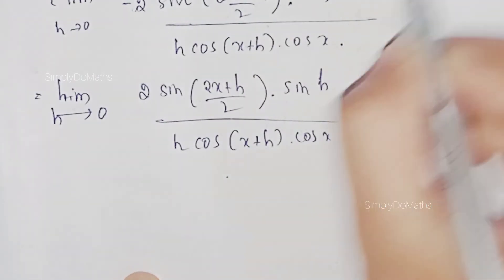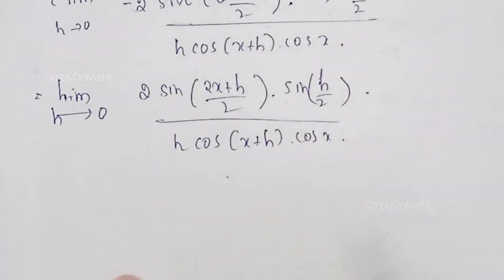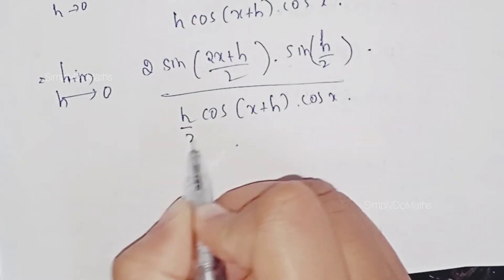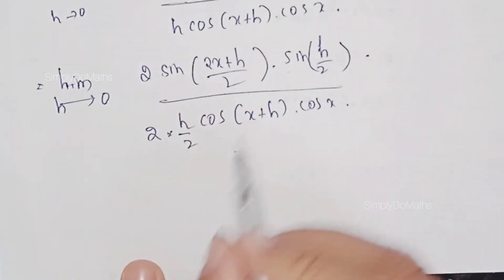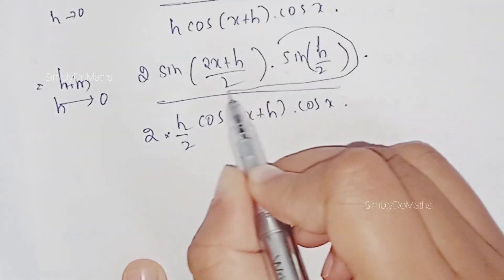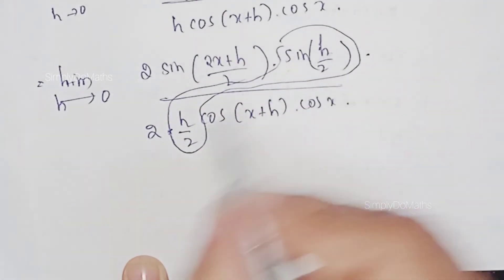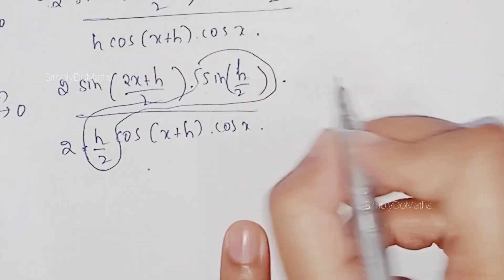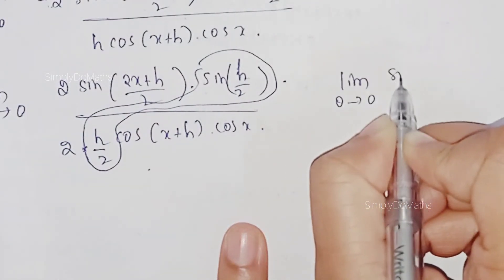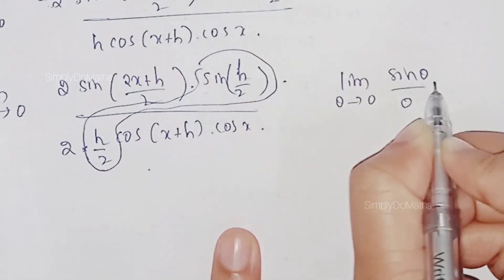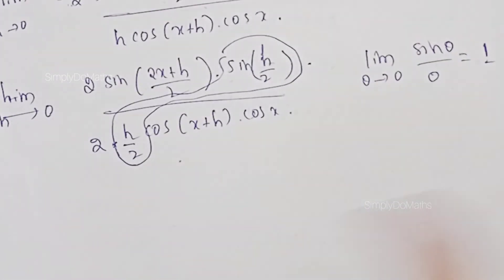We notice h by 2 appears with the sine function. We multiply and divide by 2 to combine h by 2 with the sin function, using the standard limit: as theta tending to 0, sin theta divided by theta equals 1.